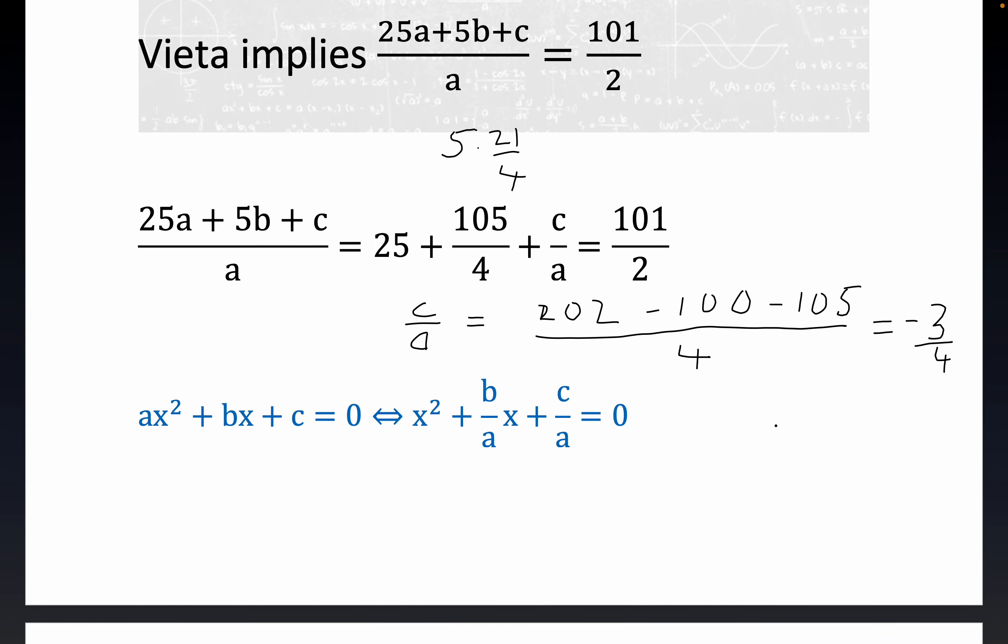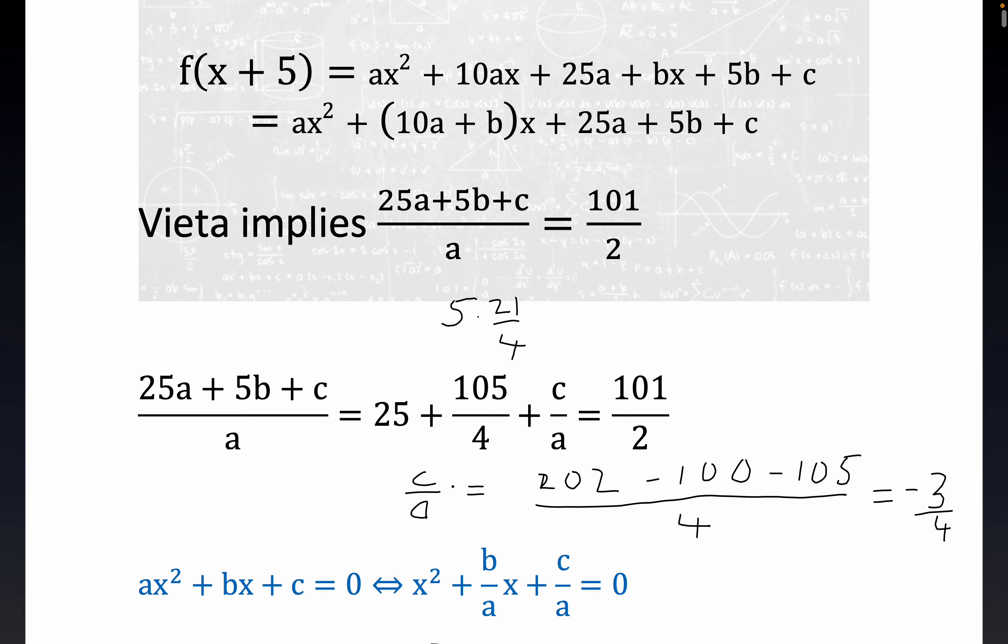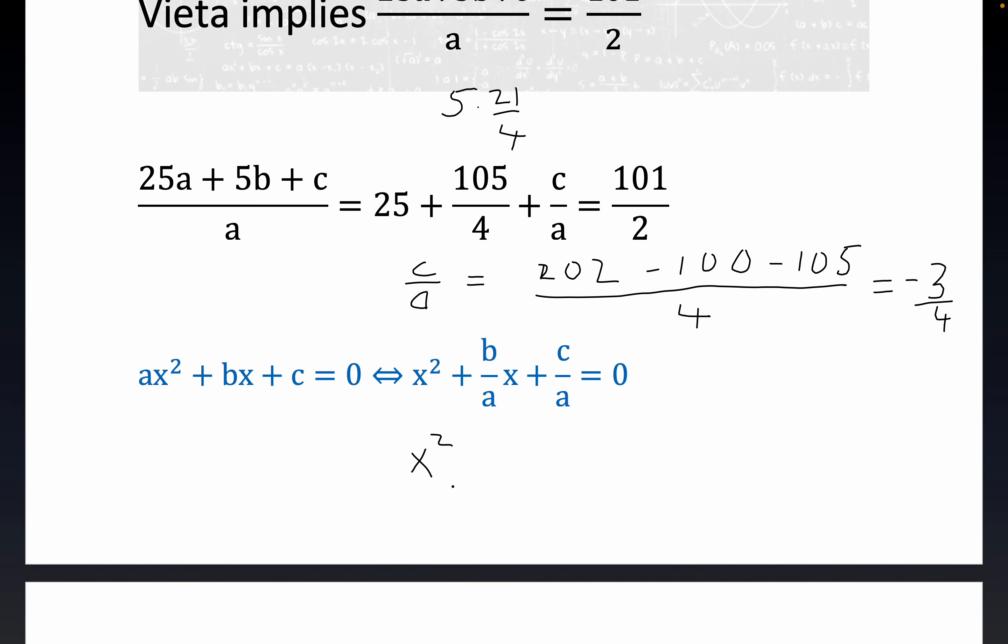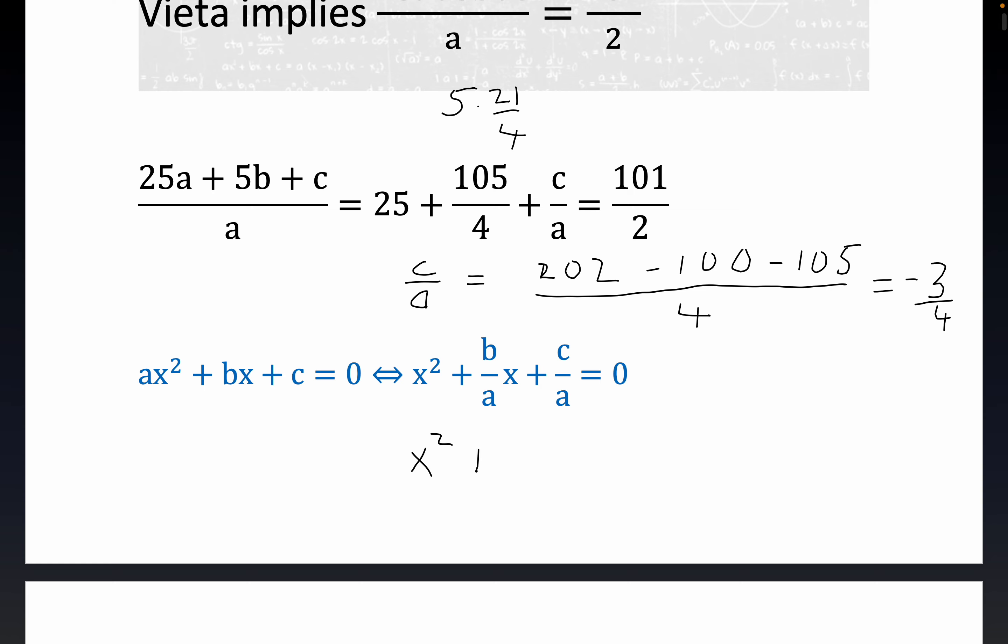And so what we get right here is that this would be X squared. I got to look up and see again. B over A is 21 over four plus 21 over four minus three over four. Yeah, there's certainly more than one way you could write this. This is in the monic state.